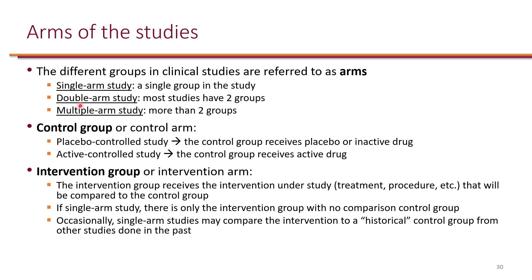The double arm study is the most common, with one arm as the control group and the other as the intervention group. When you have multiple arm studies, one of them will be the control group and you can compare it to multiple interventions — for example, a four-arm study where one is the control and three are different interventions compared to the standard of care.